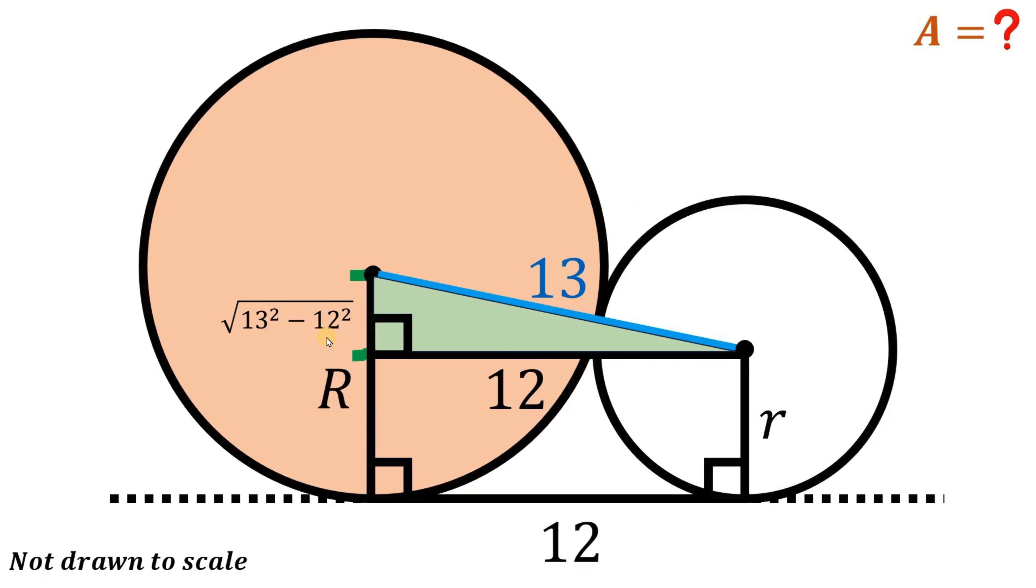Which is 169 minus 144, and 169 minus 144 is 25. This means that this segment right over here measures five units.